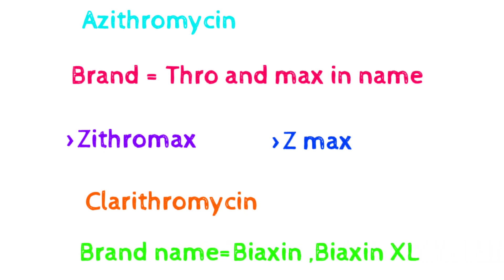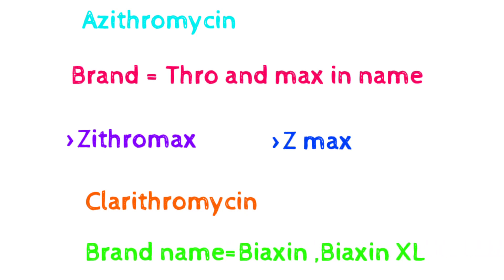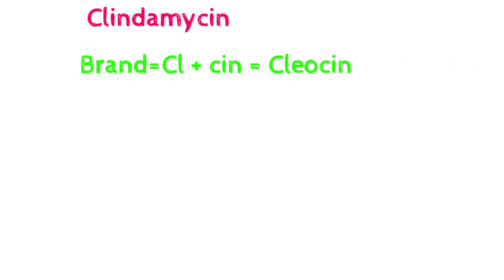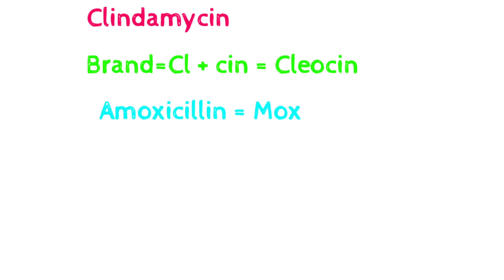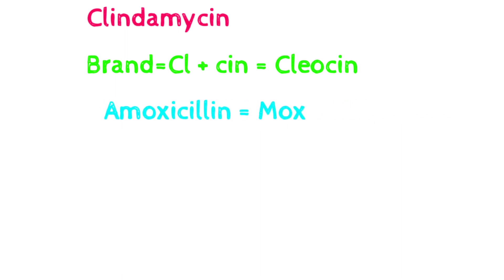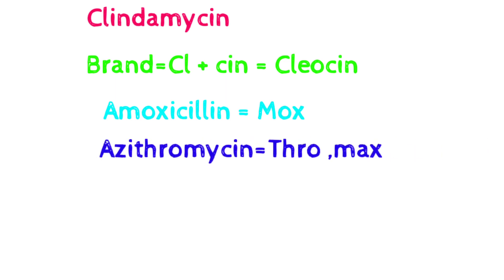For clarithromycin, the brand names contain 'zine', like Biaxin and Biaxin XL. For clindamycin, the brand name is Cleocin — where 'cleo' comes from the beginning of 'clinda' and 'cin' comes from the end of clindamycin.